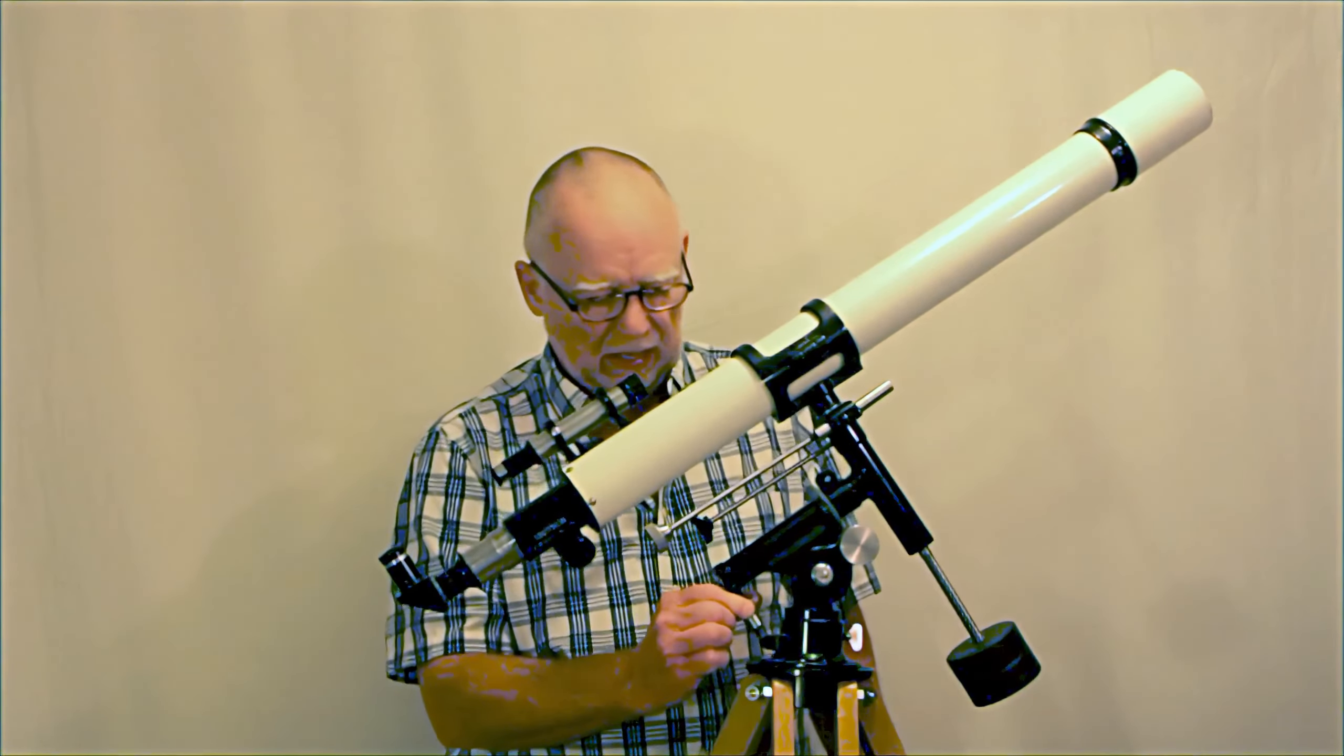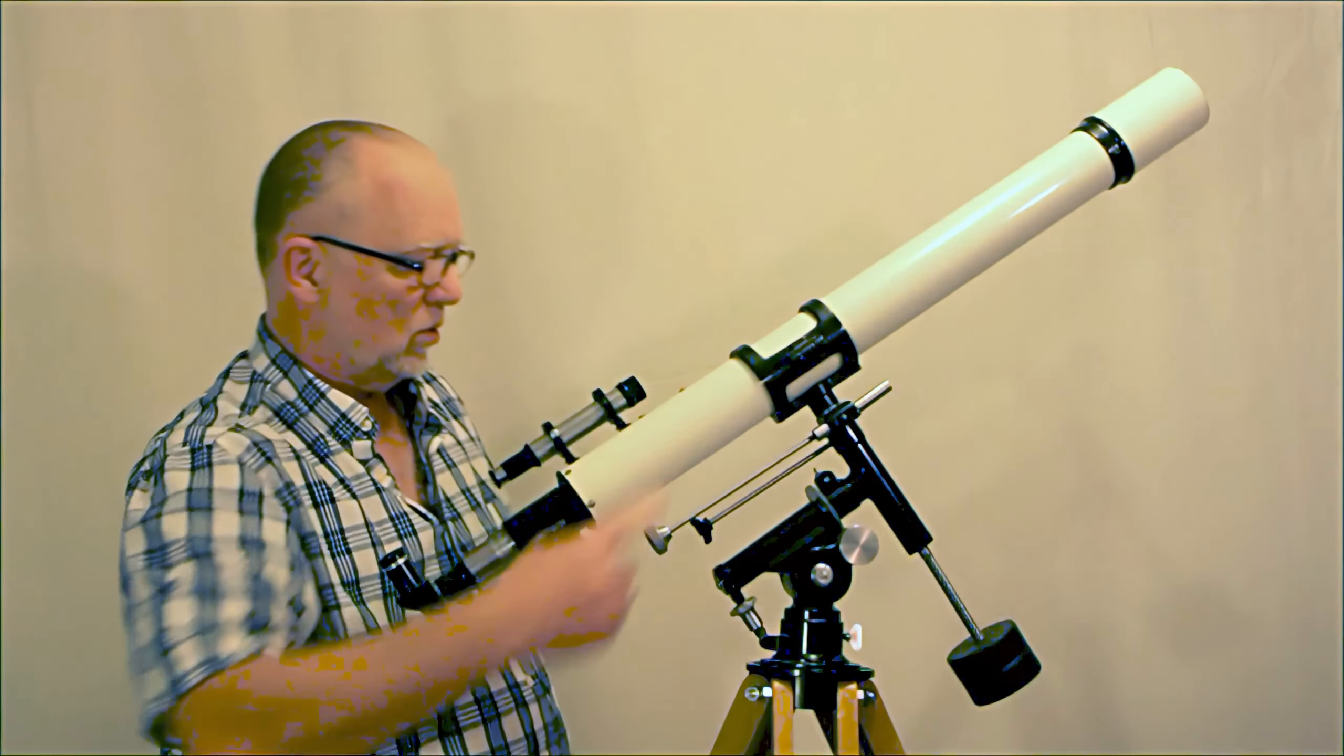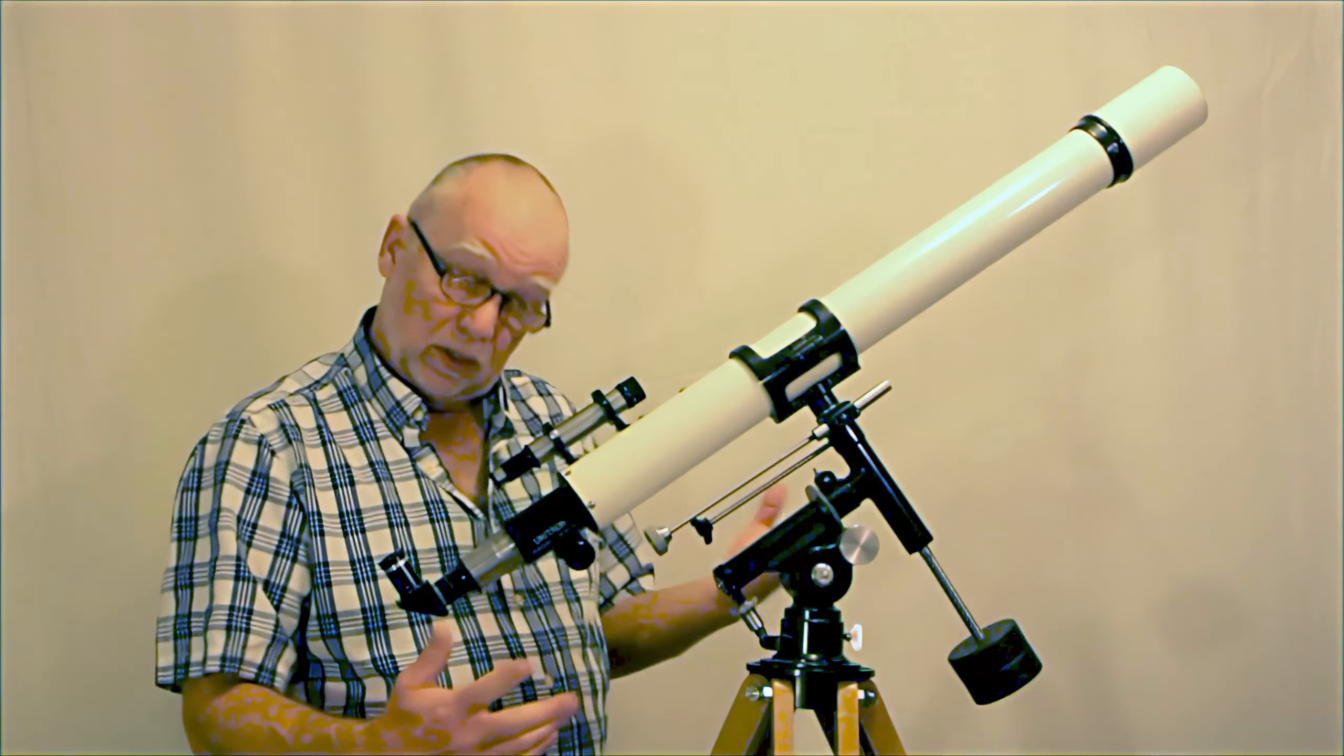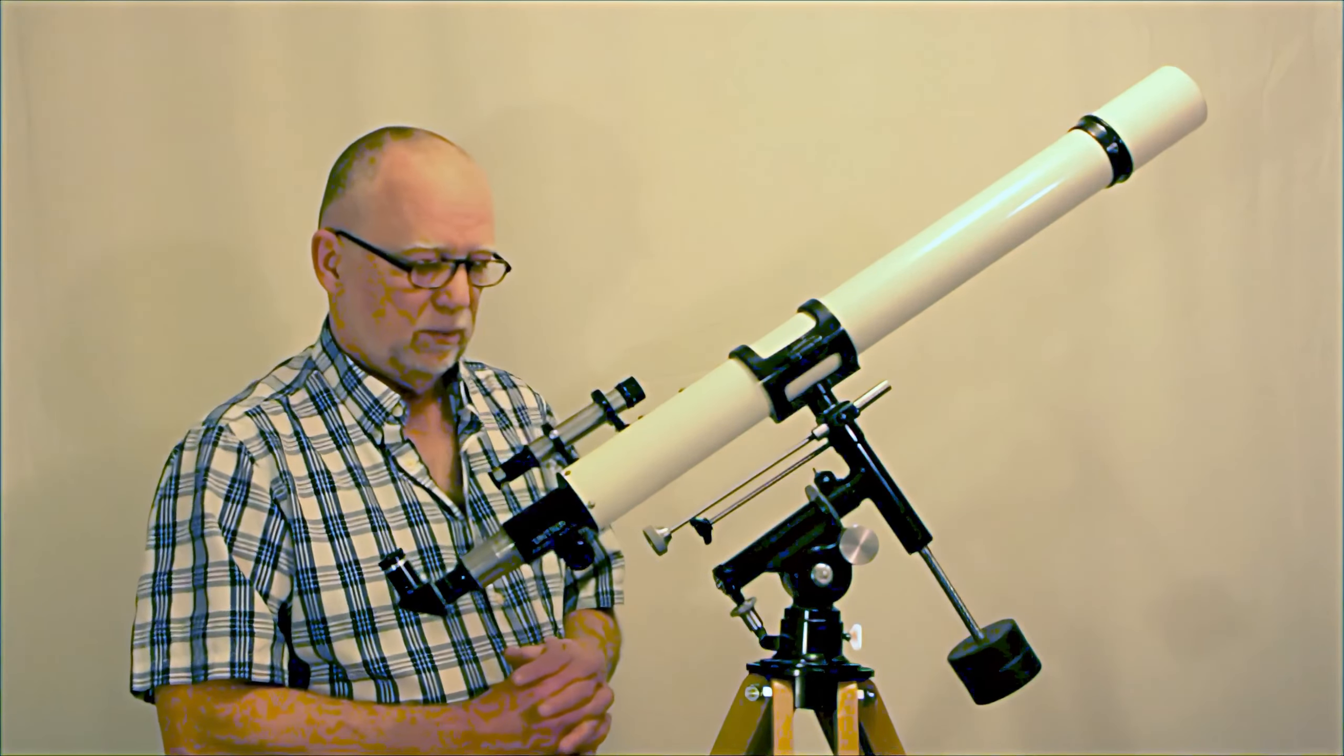Of course you don't adjust this very often. The purpose for this would be to aim the telescope at the north star in the polar axis at Polaris or actually at the celestial pole which is very near to Polaris.